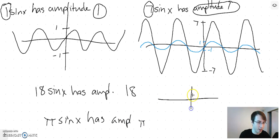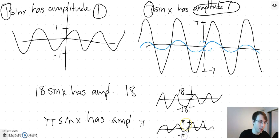If we had to draw those out, they would just be like regular sine graphs, except it would be going between 18 and negative 18. Here it would be going between 5 and negative 5. So that's what amplitude is.